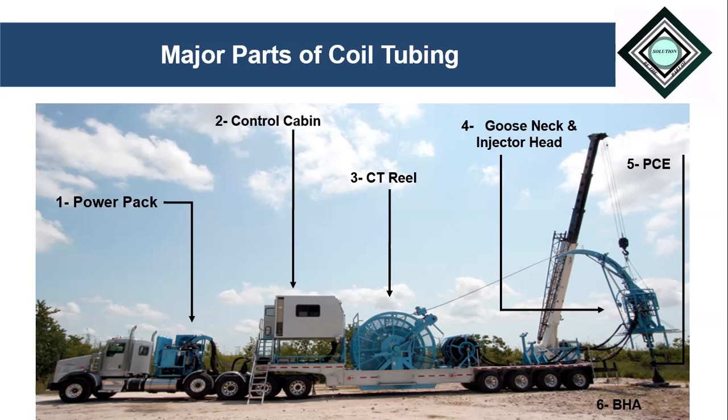The power pack is basically a diesel engine. It is used to provide hydraulic power to all other components of the coil tubing unit so that they can perform their respective functions. The control cabin is actually a centralized control station. It is used to observe, monitor, and control different functions of a coil tubing job during a real-time job.